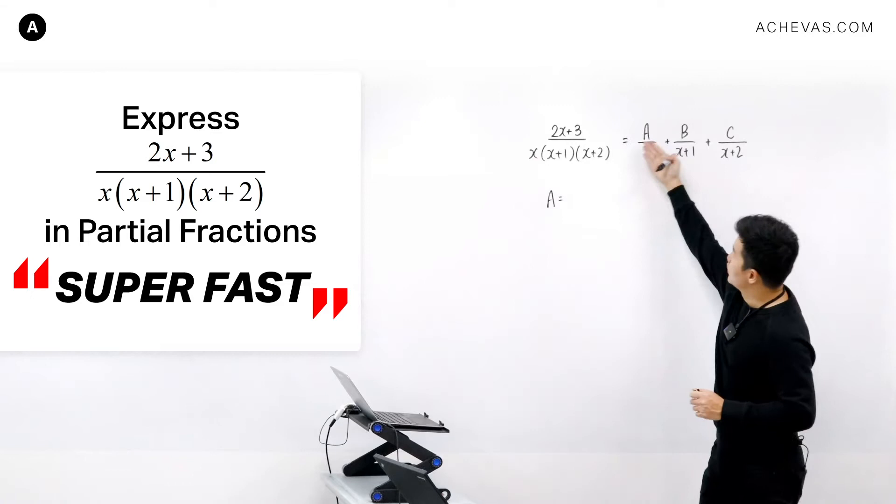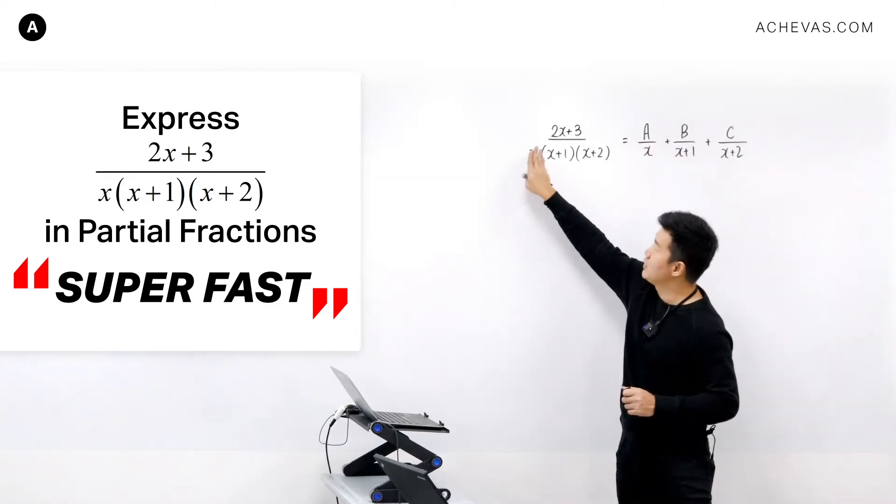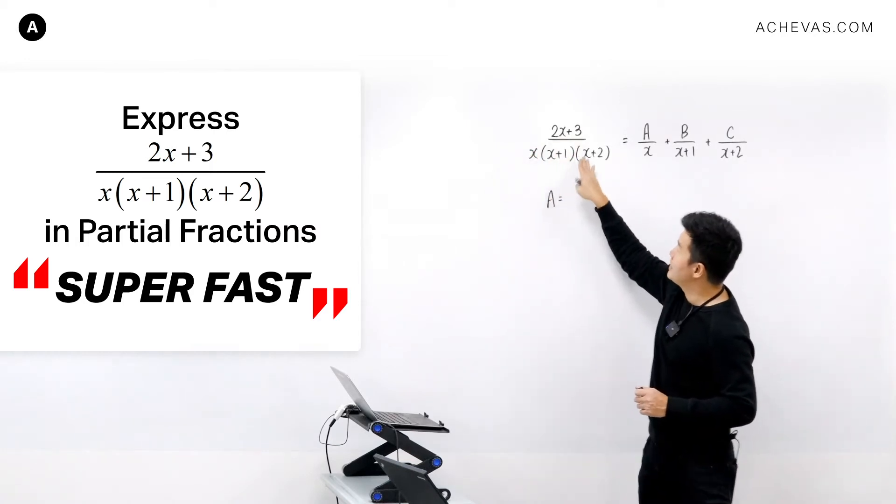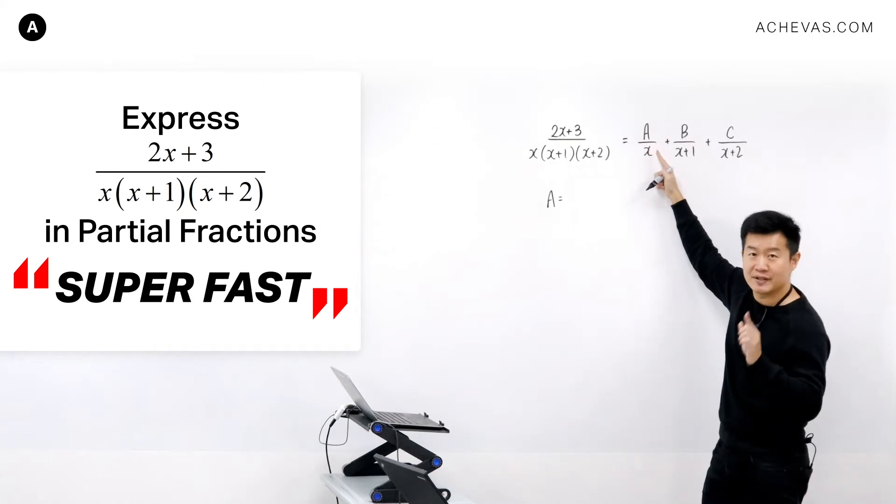To find A, you will check what is in the denominator of A. It is X. And what you'll do is you'll ignore X on the left-hand side. And for the rest of the X, you're going to replace it by the number that caused the denominator here to be 0, and that happens to be 0.